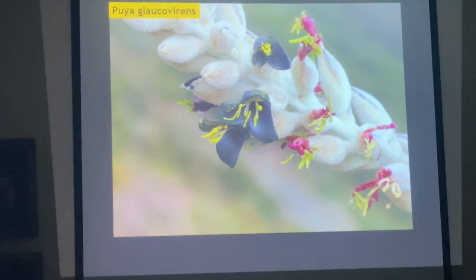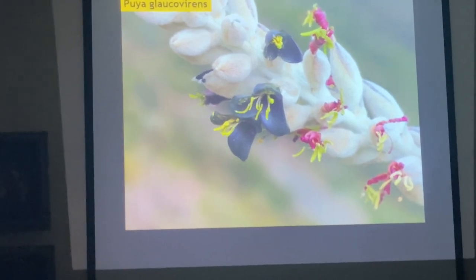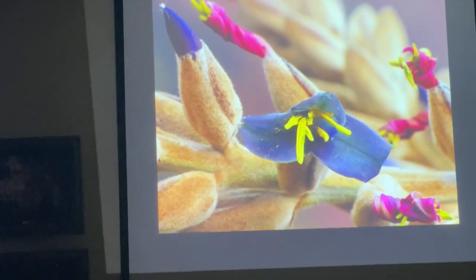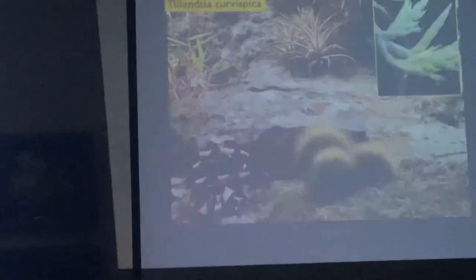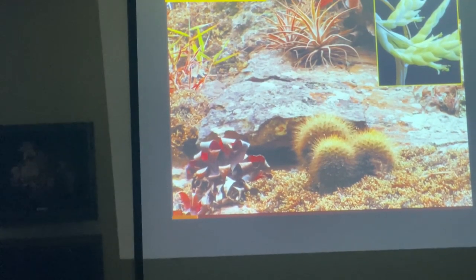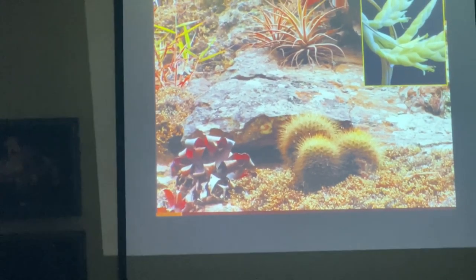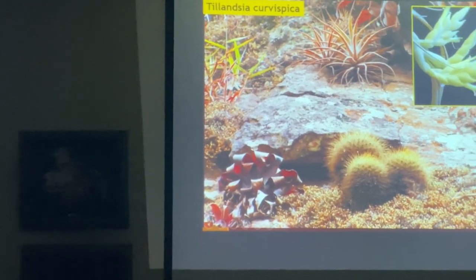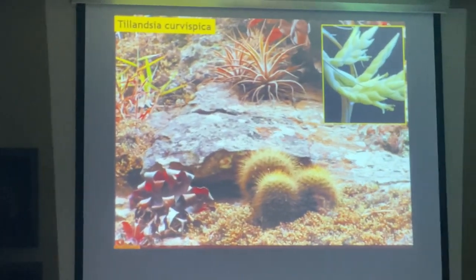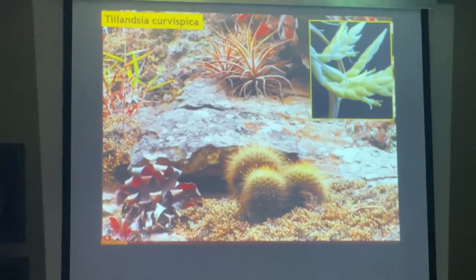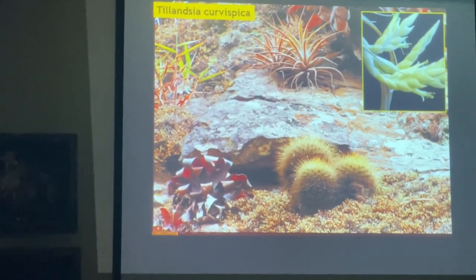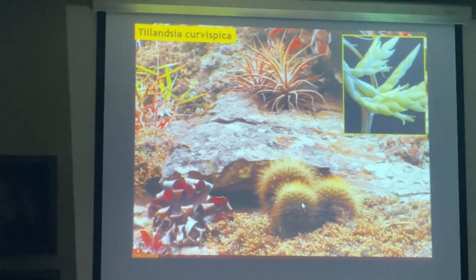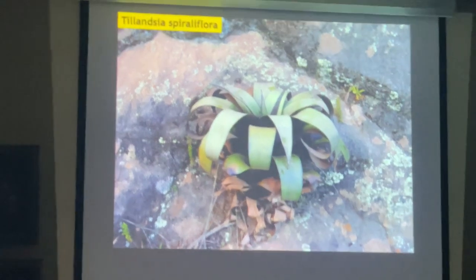Just a photo of the flowers of Puya. This is a very nice stop — Tillandsia curvispica is this one here in the back. You can see the inflorescence curves and spirals, and that's where the name is from. Growing together with some Matukana cactus. And the one on the left is Tillandsia spiraliflora.